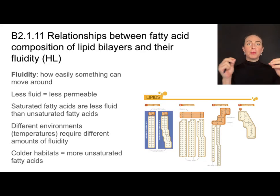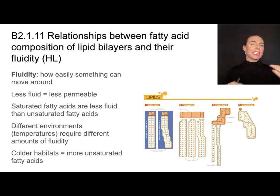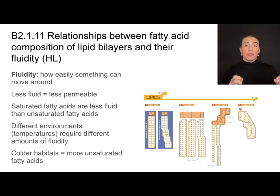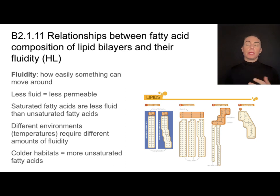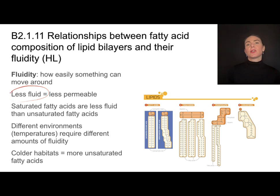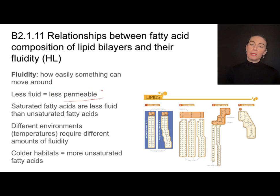When we talk about the fluid mosaic model, fluidity means how easily something can move around. That is not a fixed property of cells. The components of the cell membrane can actually determine how fluid it is. If something is less fluid and things are less able to move around, that's going to make the cell membrane less permeable.